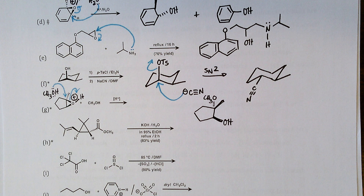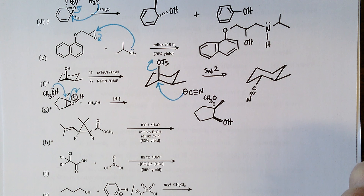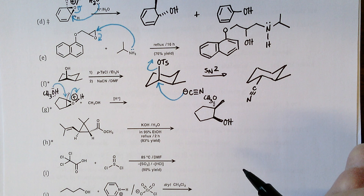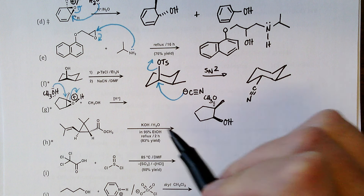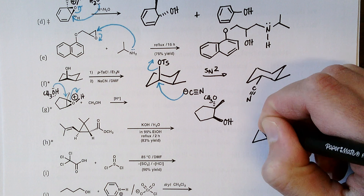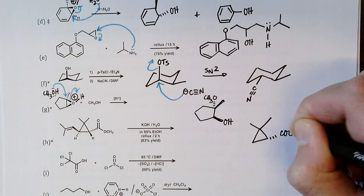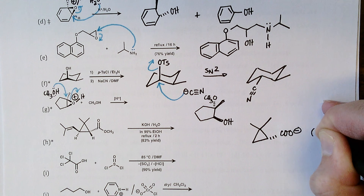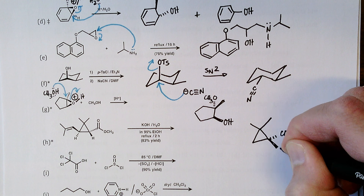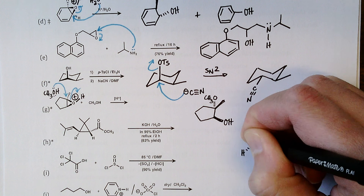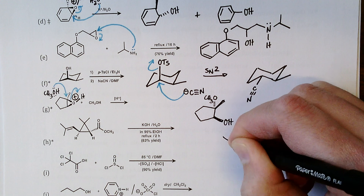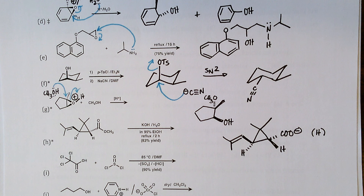Part h: a nice synthesis of a natural product acid. KOH in water with 95% ethanol (to dissolve organics) causes base-catalyzed hydrolysis of the methyl ester — transesterification may be observed, but is then further hydrolyzed by potassium hydroxide — to give the carboxylate. Accepting the free carboxylic acid was also given full credit, though under these conditions the carboxylate would predominate until acidic workup.